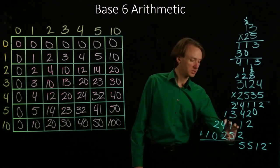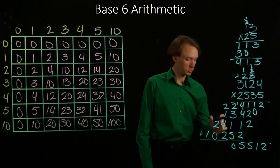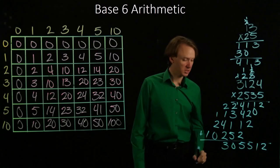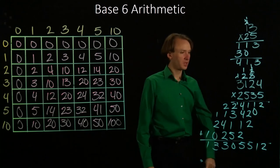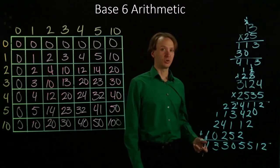10 plus 10 gives me 20. So 10 plus 3 is 13, 3, and 1. So that's what we get when we multiply those two numbers in base 6.